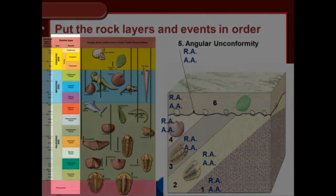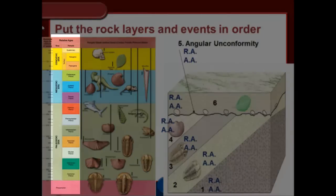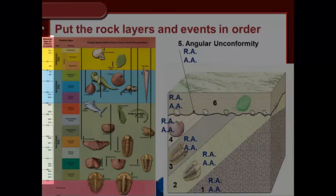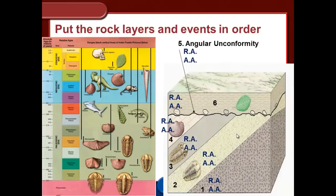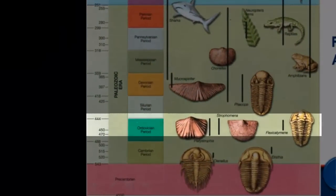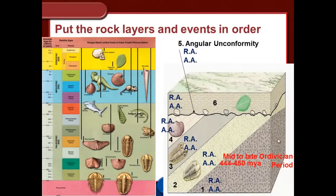Now let's identify relative and absolute ages on a new example. Remember: relative age describes the time period or era, and absolute age gives a number or range of numbers. The lowest fossil-bearing layer contains Flexicalymene, which has a small range. We find that range by going into the field, digging up fossils, and correlating rock layers. Flexicalymene is mid to late Ordovician, with a corresponding absolute age of 444 to 450 million years ago.